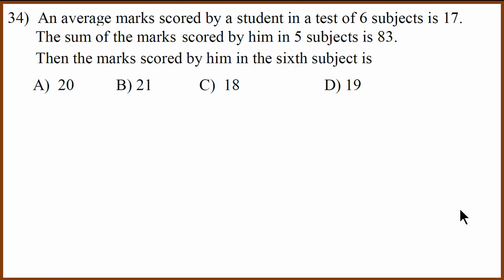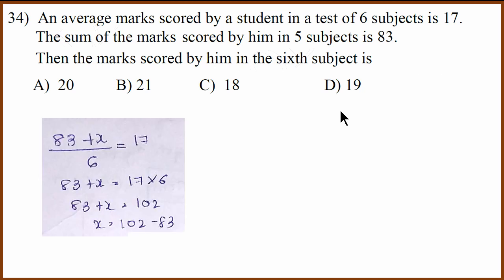So this is an average mark question. So we've been given that average of 6 subjects is 17 and we have to find the 1 missing subject. The sum of 5 subjects is 83. What we do is we use this formula 83 plus x because 5 subjects sum is 83. The missing is x. 83 plus x divided by 6 is 17. If you solve, you get x equals 102 minus 83 which is 19. The correct answer is D.